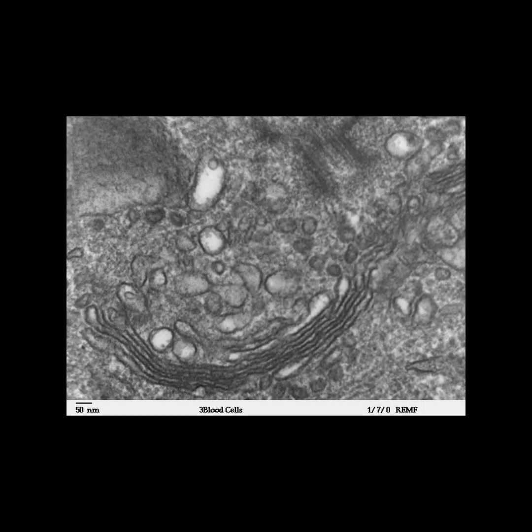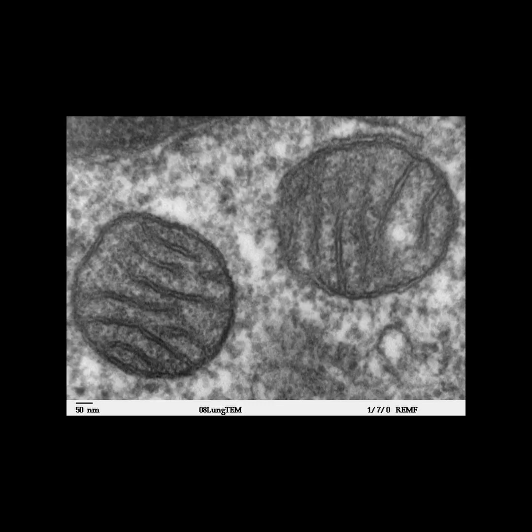Cells in both animals and plants possess specialized components or organelles that are called mitochondria. Mitochondria are considered the cell's powerhouse, where a molecule called ATP is produced.